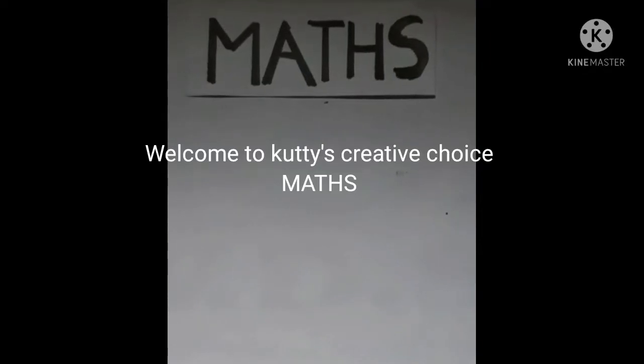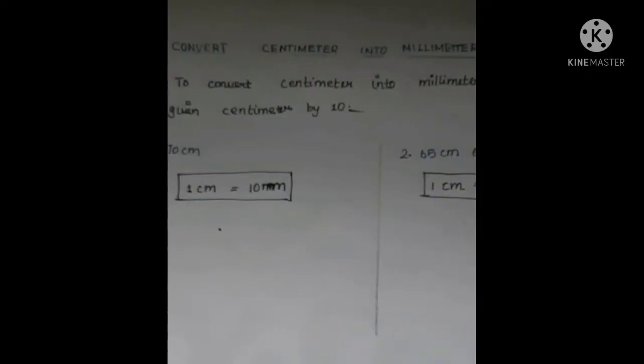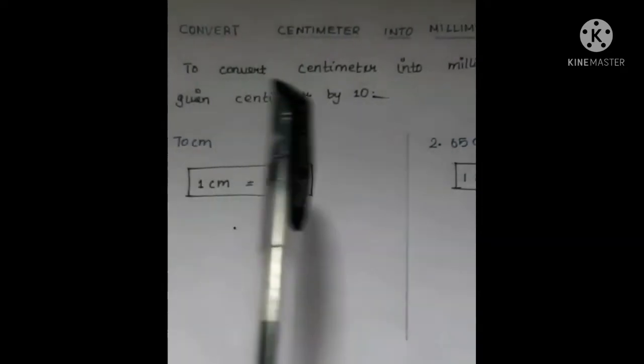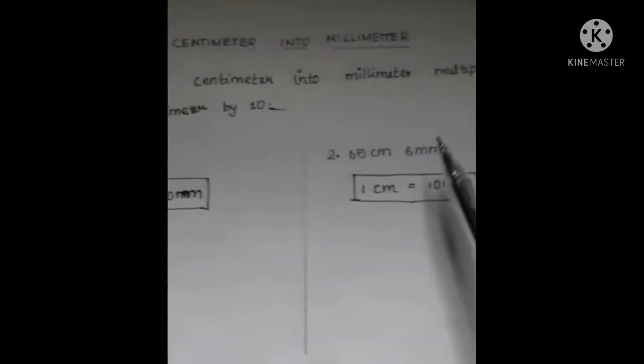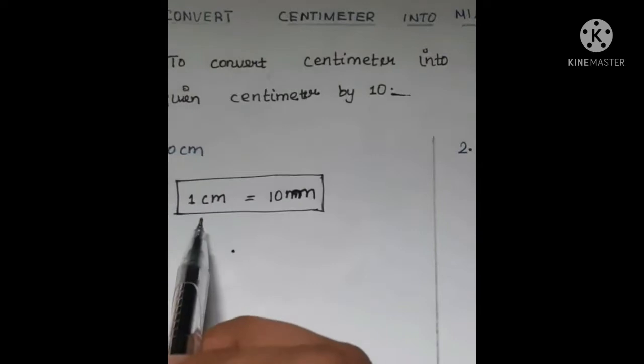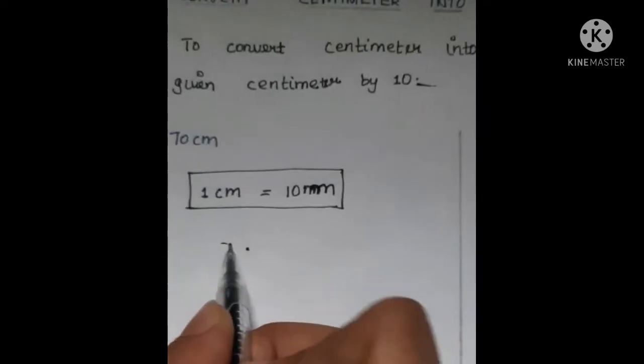Let's convert centimeters into millimeters. To convert centimeters into millimeters, multiply the centimeters by 10. For example, 70. The formula is 1 centimeter equals 10 millimeters.